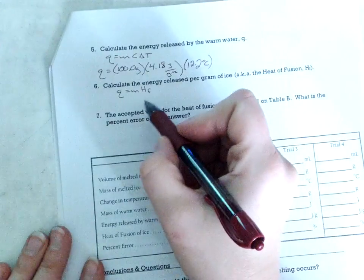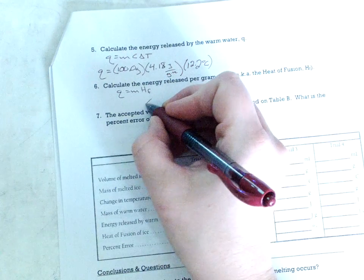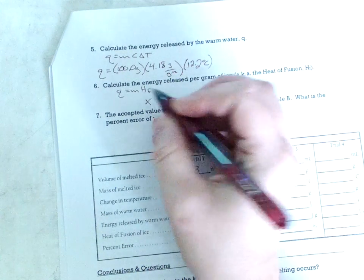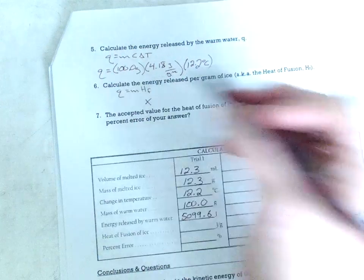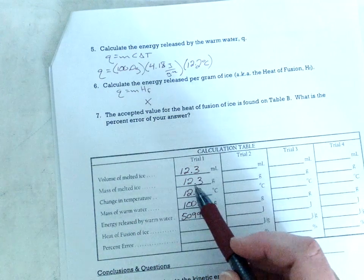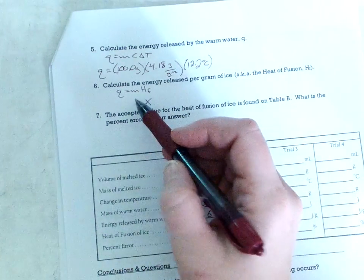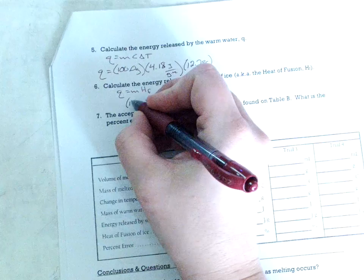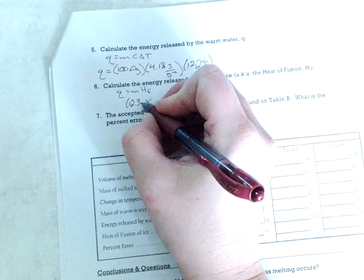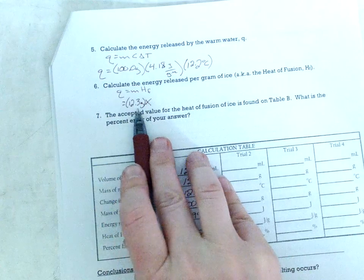So Q equals MHF. Now I just said, pretend that you don't know the heat of fusion is 334. So that is your x. The mass, which mass do you use? You're going to use the mass of melted ice, 12.3 grams in this example. Don't put 100 grams here. Okay? It's the mass of the ice because the ice is the thing doing fusion.